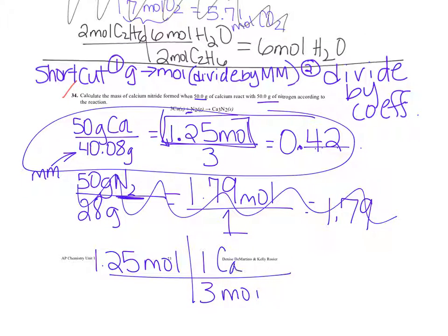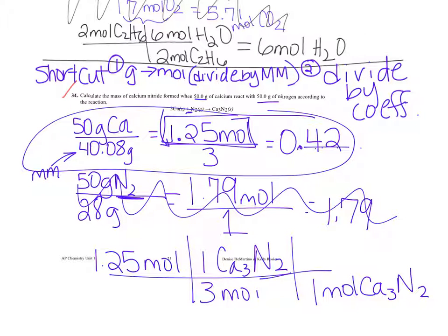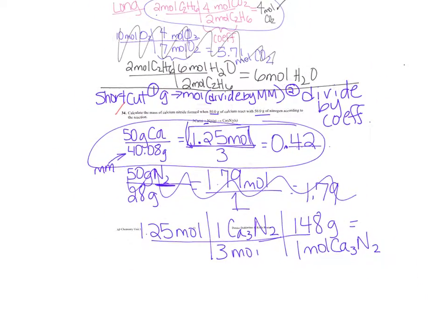One mole of calcium nitride is about 148 grams. Once you do that, you've solved the problem. I know that was quick — if you need to slow down, pause the video. You do not have to use the shortcut, but you're welcome to. You do not need to show me the long way unless I'm asking for a proof or for you to explain a limiting reactant.